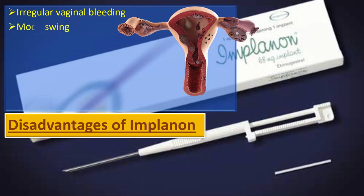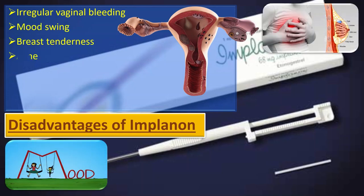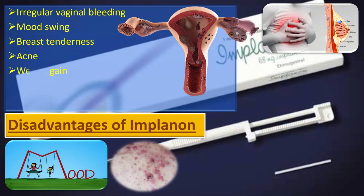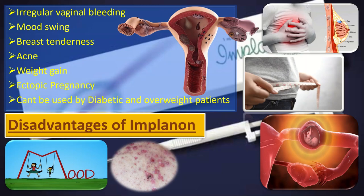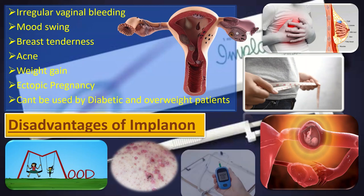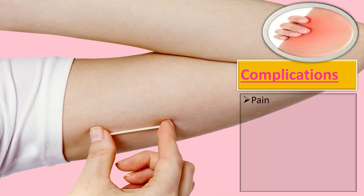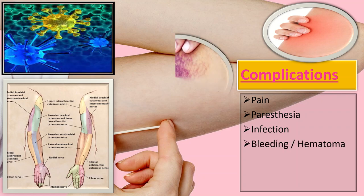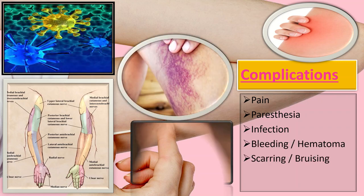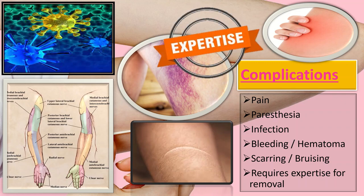The disadvantages of Implanon include irregular vaginal bleeding, mood swings, breast tenderness, acne, and weight gain. Ectopic pregnancy is a risk, and it cannot be used by diabetic or overweight patients. Complications include pain, paresthesia, infection, bleeding or hematoma, scarring or bruising, and it requires expertise for removal.